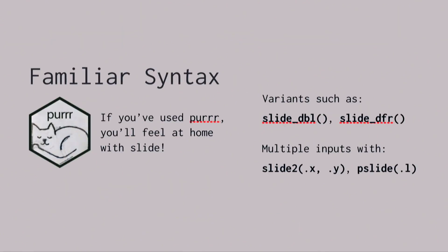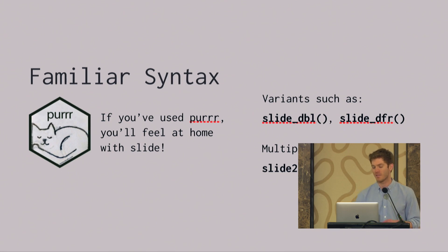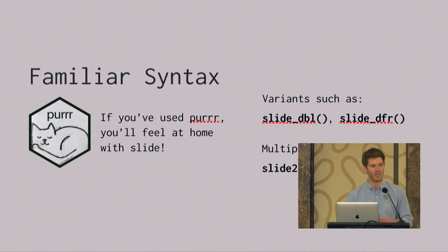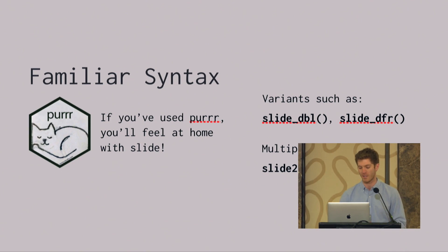This is supposed to have very similar syntax to purrr. Slide is very much like map — in fact, the defaults are the same — and it always returns a list. It's completely type and size stable. There are variants such as slide_double, slide_dfr, slide2, and pslide. Everything that you might expect with purrr, there is in slide as well.